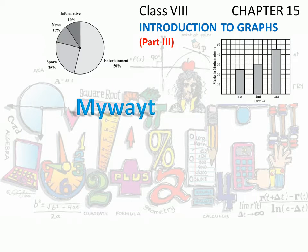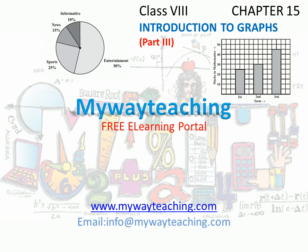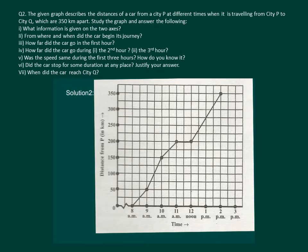Hello friends, this video is brought to you by mywayteaching.com. Let us read the question first. The given graph describes the distance of a car from a city P at different times when it is traveling from city P to city Q, which are 350 kilometers apart. Study the graph and answer the following.